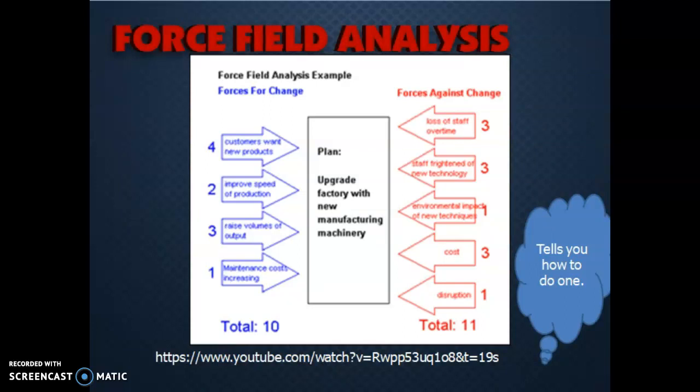So in the centre, you write the dilemma or you write the problem. So this one is upgrade the factory with new manufacturing machinery. So forces for the change are written on the left hand side. Customers want new products and the new machinery will help develop that. It will speed up the production. It will raise the volume of output. You will be able to make more things. And next to all these forces for change, you can see numbers allocated next to them. And if we add those numbers up, 4 plus 2 plus 3 plus 1, we will see that that totals 10.